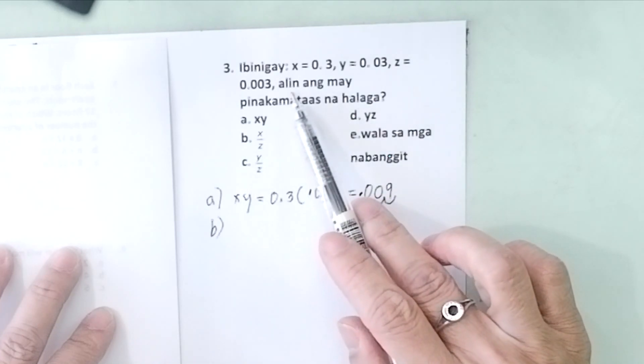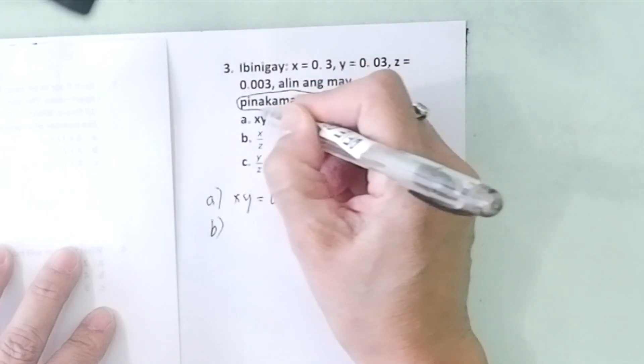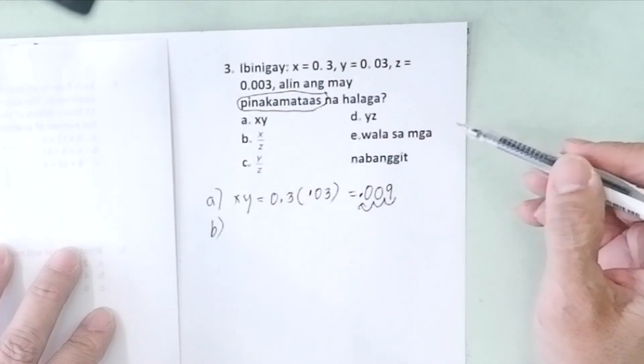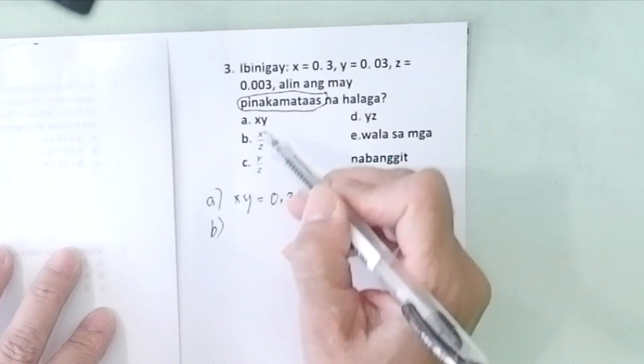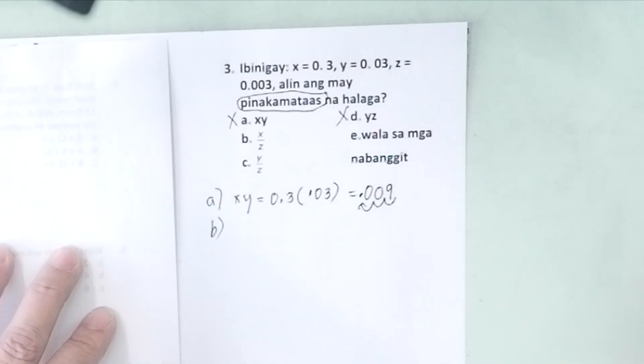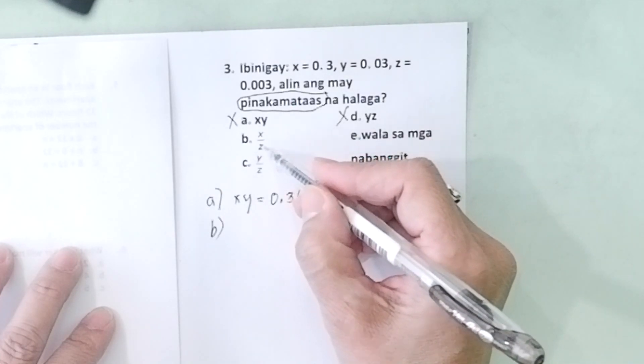What we need here: alin ang may pinakamataas na halaga - which has the largest value? So multiplication, A and D will already be out because when you're multiplying decimals, you are counting the decimal places, so you are making the values small. So we will not try D anymore.